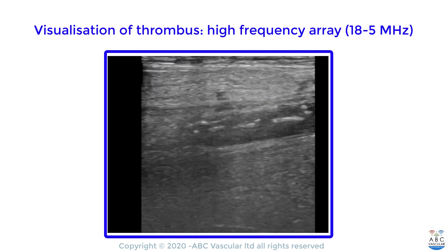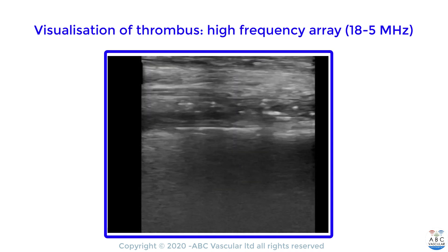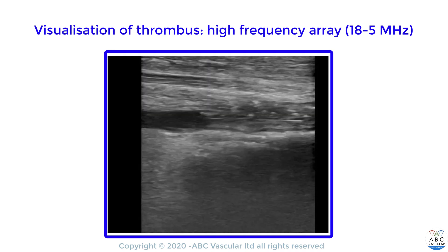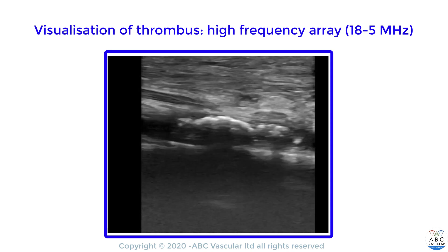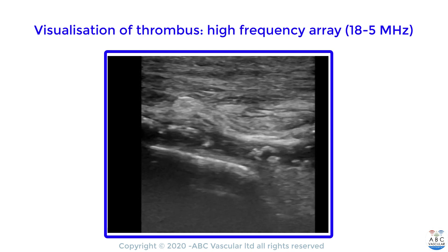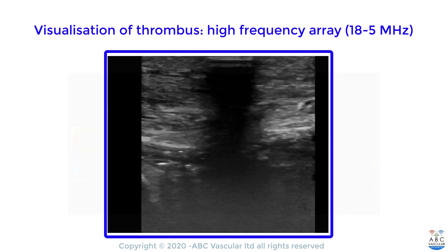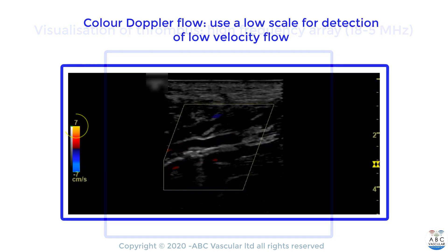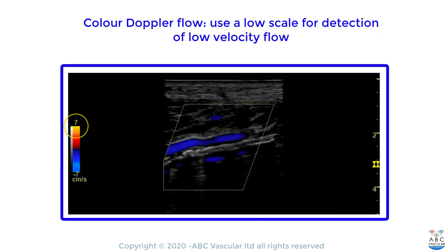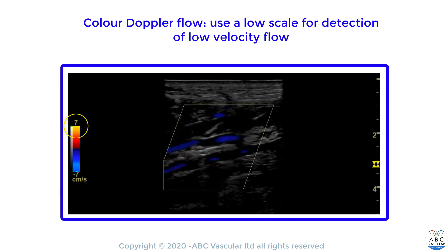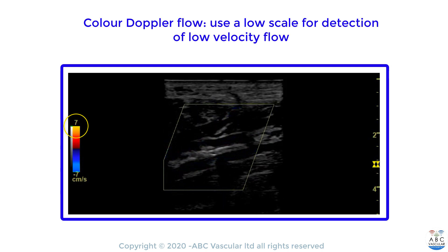Such transducer is very useful in determining the very distal posterior tibial artery, as these lie very superficially under the skin. In order to confirm the presence of an occlusion, we can use color doppler flow. We must use a very low color flow scale, as represented in this video, in order to detect any low velocities.